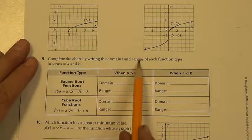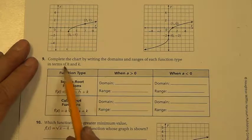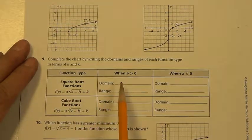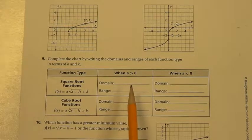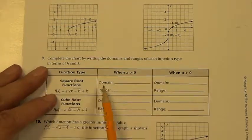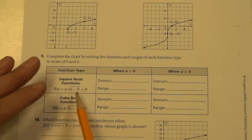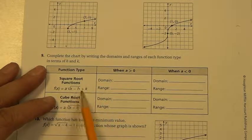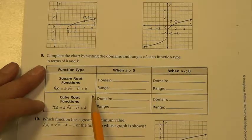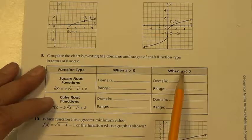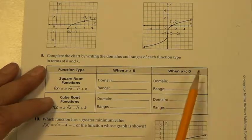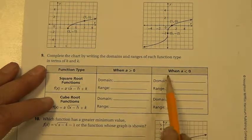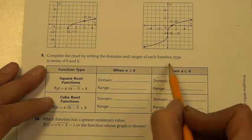Very last thing, complete the chart by writing the domains and ranges for each function type in terms of h and k. There is, and I did include it in the notes in class, so people in class might have it for you. If you don't understand it, go back and look at some of these. I want you to look for patterns and relationships. The domain is affected by something here in the square root. And when your a value is less than 0, in other words, when it's reflected, then it does something different to the domain and range. So this is the reflected.